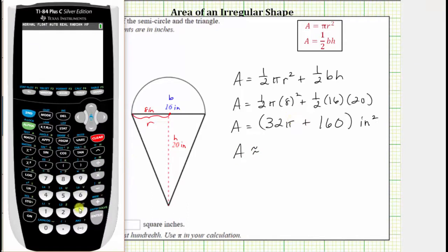We enter 32 and then pi is second then the exponent key plus 160. Enter. We're asked to round to the hundredths place value which is two decimal places. Notice how there's a zero in the thousandths place value which means you round down and therefore the total area is approximately 260.53 square inches.